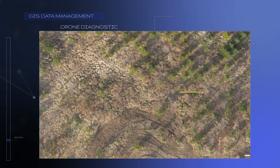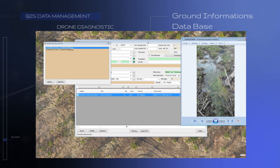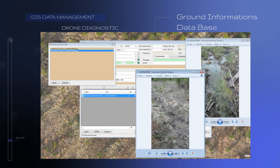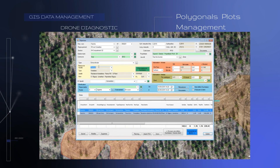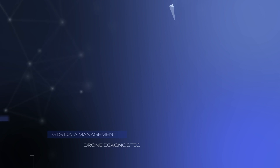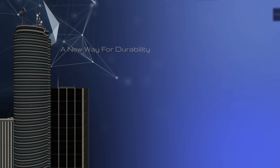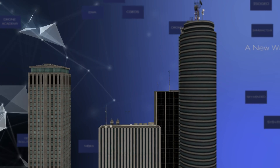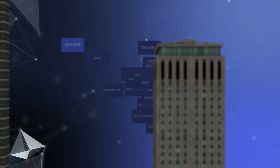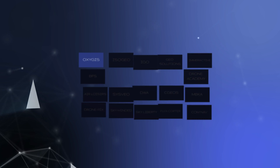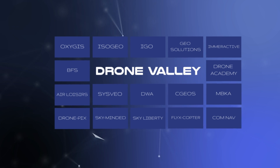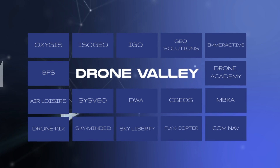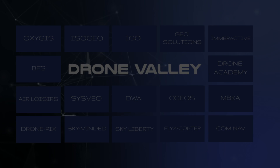Smartphones and tablets give geo-localized ground information such as photos, vocal or written comments. A polygon or plots editor helps to analyze and manage any information in any given surface.